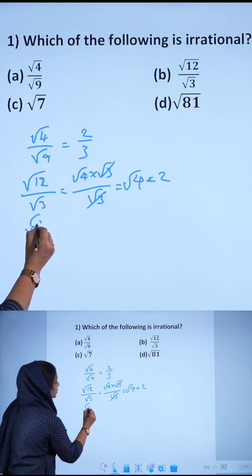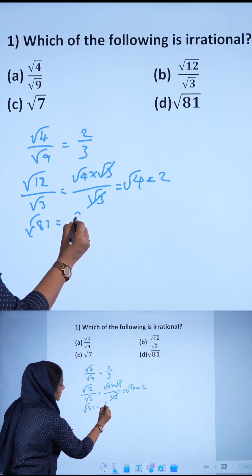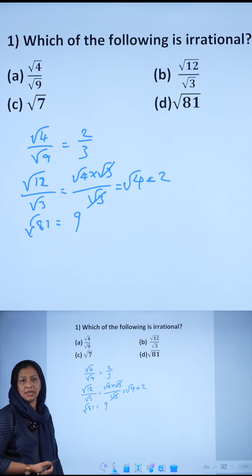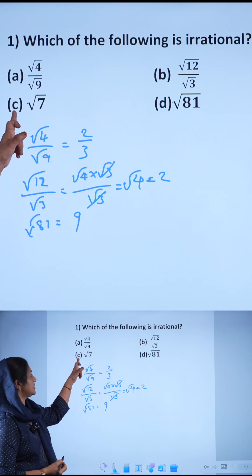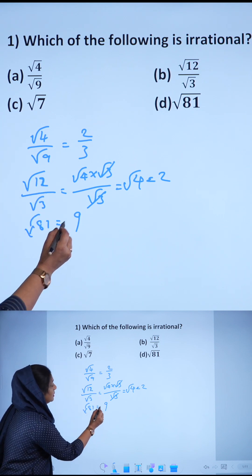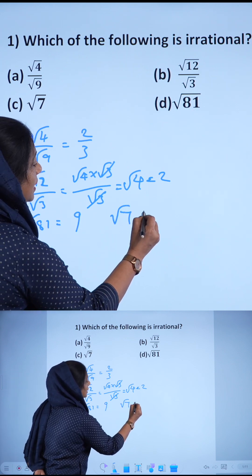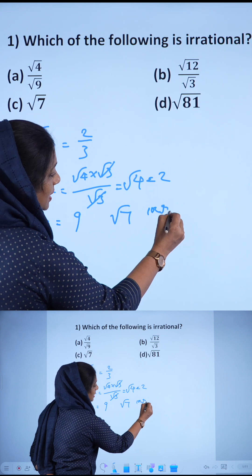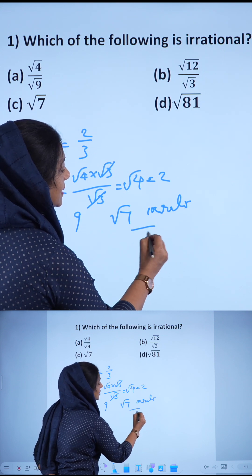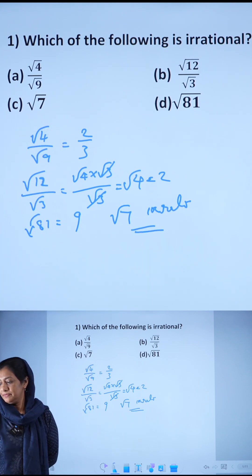Next one, root 81. We can also write it in the form of rational because root 81 is equal to 9. The last one, root 7, we cannot write in the form of p by q. So, root 7 is an irrational number. Root 7 is the correct answer here. Thank you.